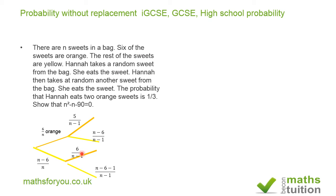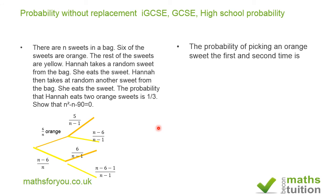For this question we don't need the yellow branch — we're dealing with the orange branch only. The probability that Hannah eats two orange sweets is the product along the orange-orange branch: six over n times five divided by n minus one.